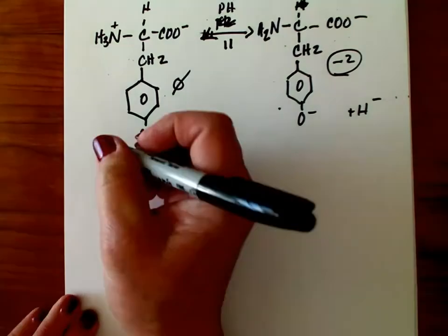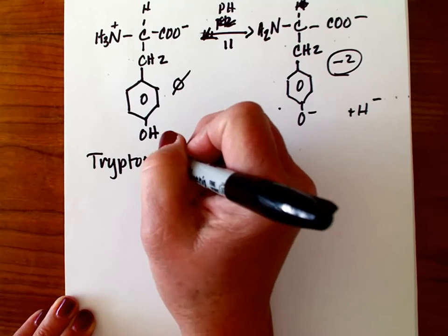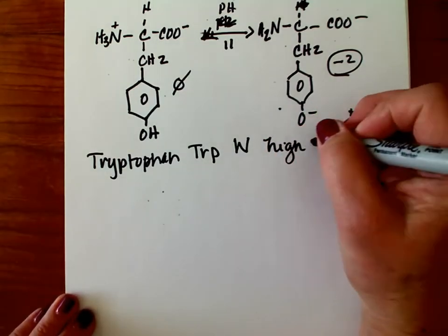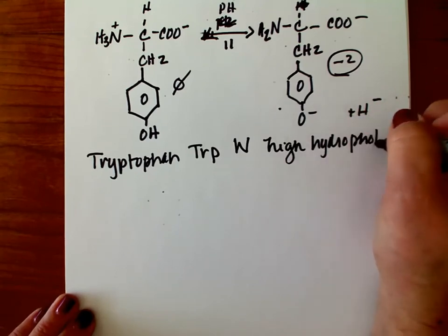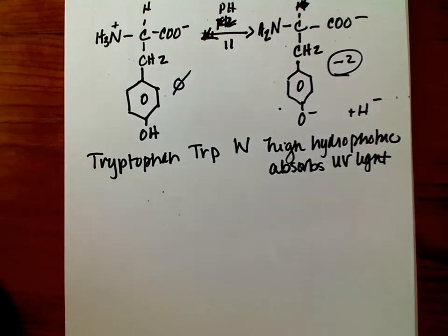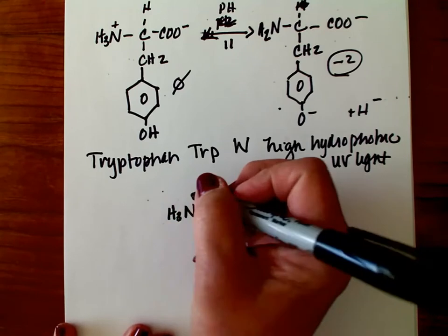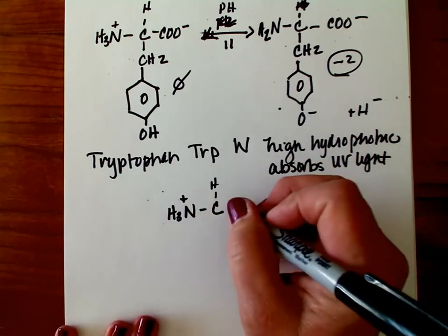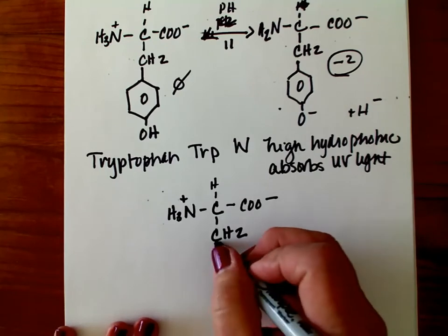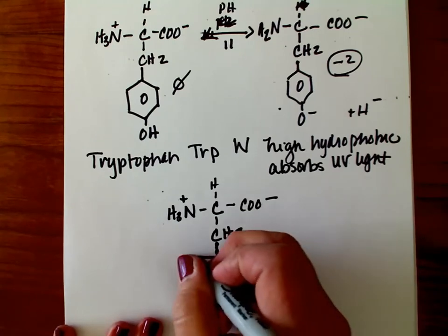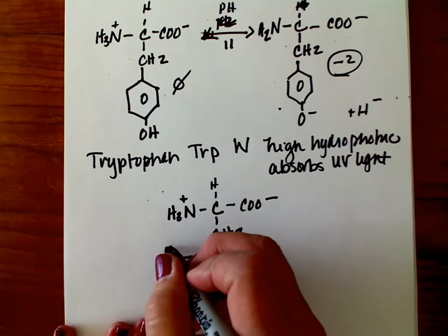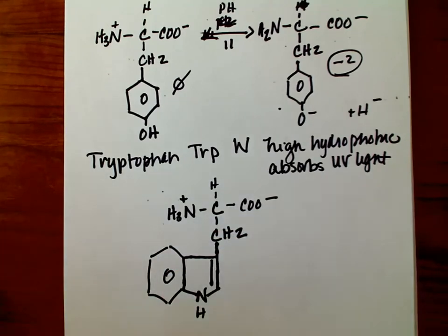The last in this aromatic group is tryptophan — TRP, W. Like phenylalanine, this is highly hydrophobic and absorbs UV light. Most of you probably are familiar with this as being something in turkey that causes us to feel sleepy after that big Thanksgiving meal — though that's kind of exaggerating it. And that is tryptophan.